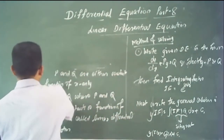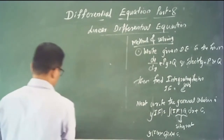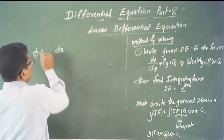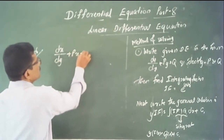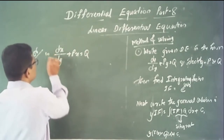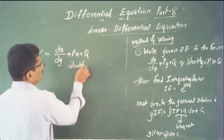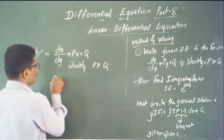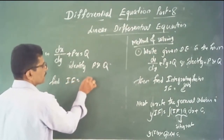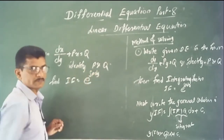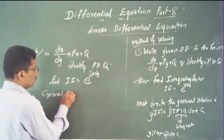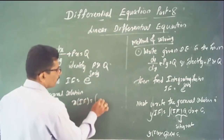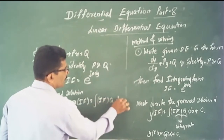For the second form, if the given differential equation is dx/dy + P·x = Q, identify P and Q — these are either constants or functions of y only. Find the integrating factor: e^(∫P dy). Then write the general solution: x × I.F. = ∫(I.F. × Q) dy + C.